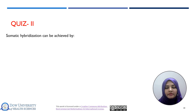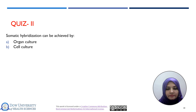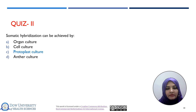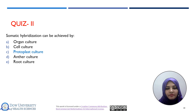Here is another quiz: Somatic hybridization can be achieved by organ culture, cell culture, protoplast culture, or root culture. The correct answer is protoplast culture.